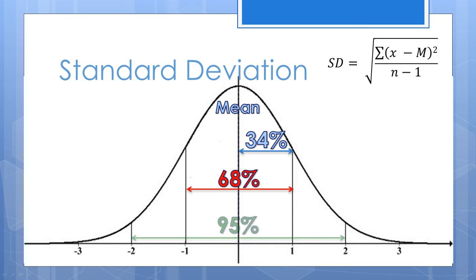Approximately 95% of scores fall between two standard deviations above and two standard deviations below the mean.